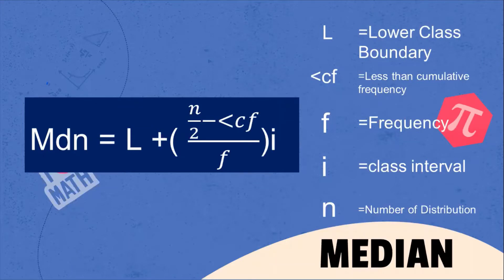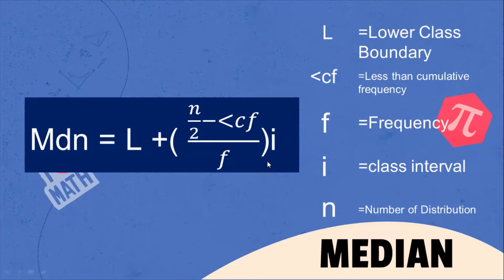The formula used in solving for the median of grouped data is: Median = L + ((N/2 − less than CF) / F) × I, where L is the lower class boundary, less than CF is the less than cumulative frequency, F is the frequency, I is the class interval, and N is the number of distribution.